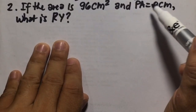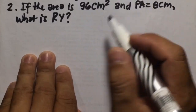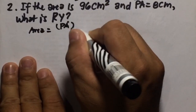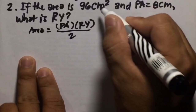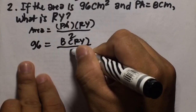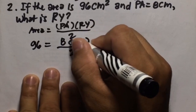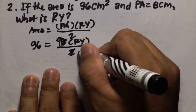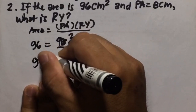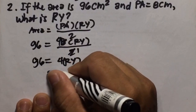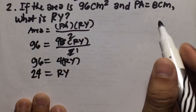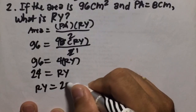Number two: if the area is 96 cm squared and PA equals 8 cm, what is RY? Using the formula, 96 equals 8 times RY over 2. Dividing 8 by 2 gives 4, so 4 times RY equals 96. Dividing both sides by 4, RY equals 96 divided by 4, which is 24. So RY is equal to 24 cm.